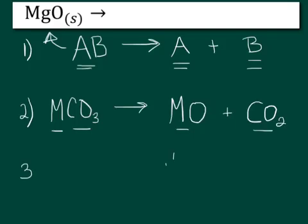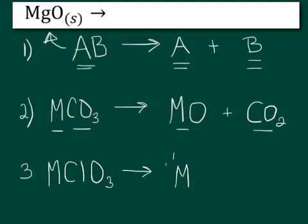Our third type of decomposition will be a metal that's bonded to a chlorate. And this is always going to make a metal chloride. So that metal bonded to a chlorine ion, or chloride ion, and oxygen gas. And so these are our three different types of decomposition reactions.